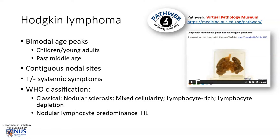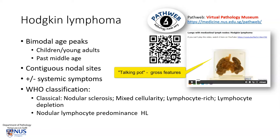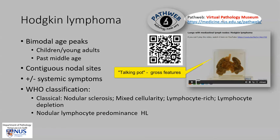The WHO has classified Hodgkin lymphoma into two main groups. We have the classical group, which has four types: nodular sclerosis, the commonest; mixed cellularity, the next commonest; and then lymphocyte-rich and lymphocyte depletion types. The other major type is nodular lymphocyte predominance Hodgkin lymphoma. We also have a video showing the gross features of Hodgkin lymphoma on a virtual pathology specimen, accessible on the same YouTube channel or on our web resource PathWeb in the Virtual Pathology Museum.